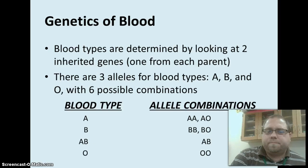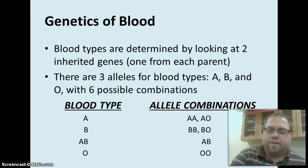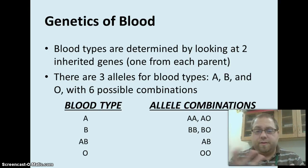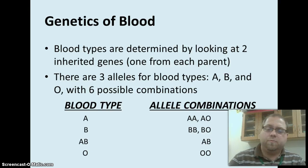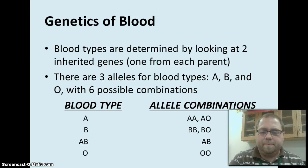Okay, so genetics of blood. There are only three major types of blood type alleles: A, B, and O. You should know how to do a Punnett square. A and B are dominant alleles, whereas O is a recessive allele. So anytime you're going to have an A come up against an O, it's going to win out. Or a B against an O, it's going to win out. So you can have some different combinations to make that blood type.